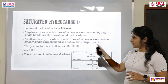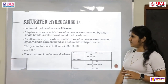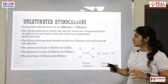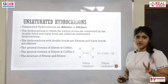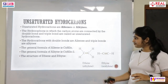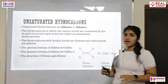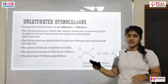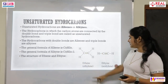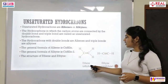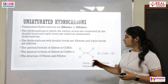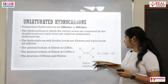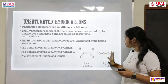Now let us move to unsaturated hydrocarbons. There are two types: alkenes and alkynes. Hydrocarbons in which the carbon atoms are connected by a double bond are called alkenes, and those connected by a triple bond are called alkynes. The general formula for alkenes is CnH₂ₙ, and the general formula for alkynes is CnH₂ₙ₋₂. When writing the name, we use the ending '-ene' for double bond compounds and '-yne' for triple bond compounds.